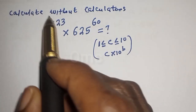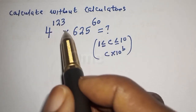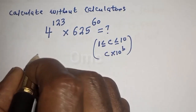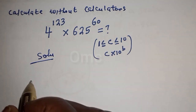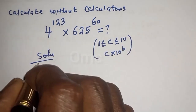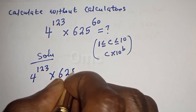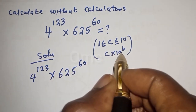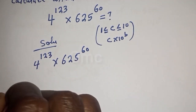Hello, in this class we want to calculate this math problem without using a calculator: 4 raised to power 123 multiplied by 625 raised to power 60. The solution is going to be expressed in the form C multiplied by 10 raised to power B.